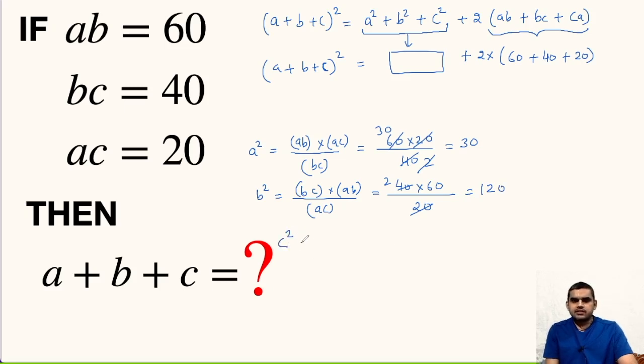Likewise, C square, here we will have AB, here it will be AC times BC. So B and B, A and A can be cancelled. So finally we will get C squared.